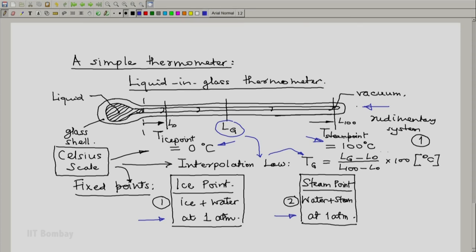And this is the interpolation law which gives me my body temperature at say 36 degrees C or 37 degrees C. We will discuss more about thermometry and associated thermodynamic concepts soon after this. Thank you.